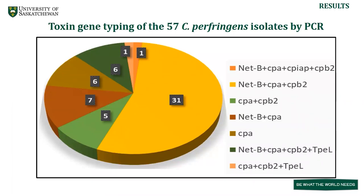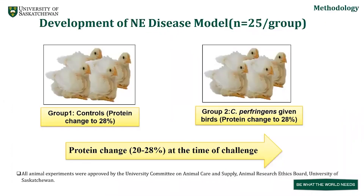We found seven different toxin gene combinations including both major and minor toxin genes. Based on the literature, we selected C. perfringens isolates with alpha toxin, NetB, CPB2, and TpeL for our challenge studies. Birds were randomly divided into two groups of n equals 25 per group, and we selected high protein diet as a predisposing factor, changing protein content from 20 to 28 percent at the time of challenge.